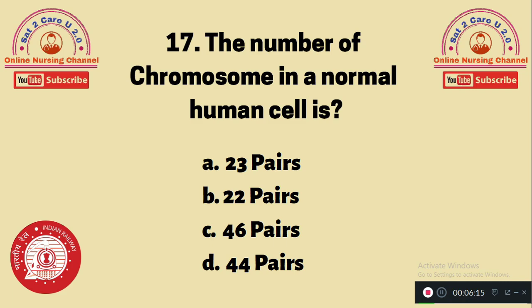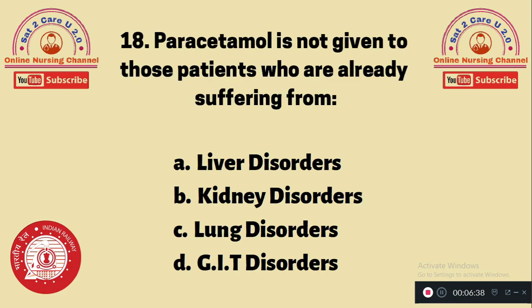Question 17: The number of chromosomes in a normal human cell is — A. 23 pairs, B. 22 pairs, C. 46 pairs, D. 44 pairs. The number of chromosomes in a human cell is 23 pairs, which equals 46 chromosomes total. The answer is A — 23 pairs.